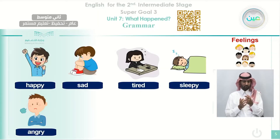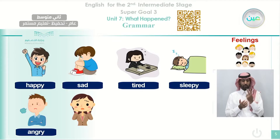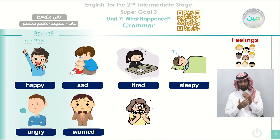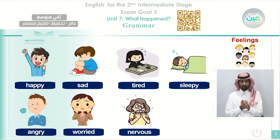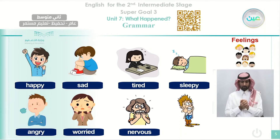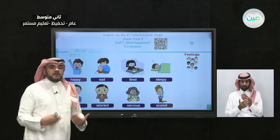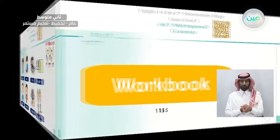This guy is angry because something happened to him and it made him angry. And here, this lady is worried — she is worried about something. This lady is nervous because something upset her. And here, this guy is scared. Maybe something frightened him, so he looks scared.